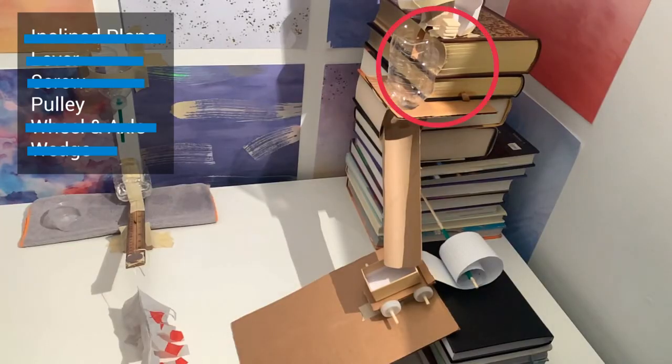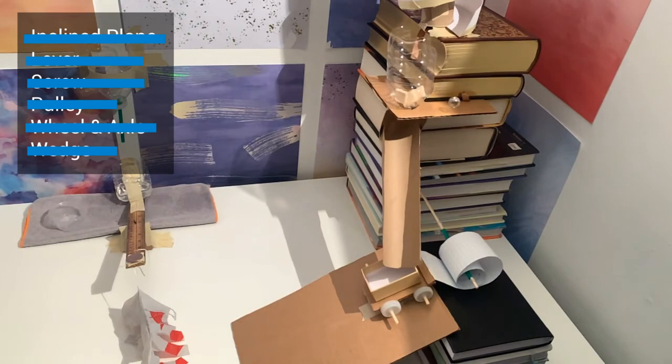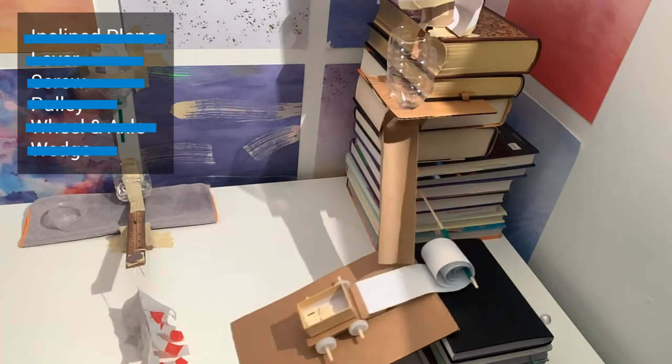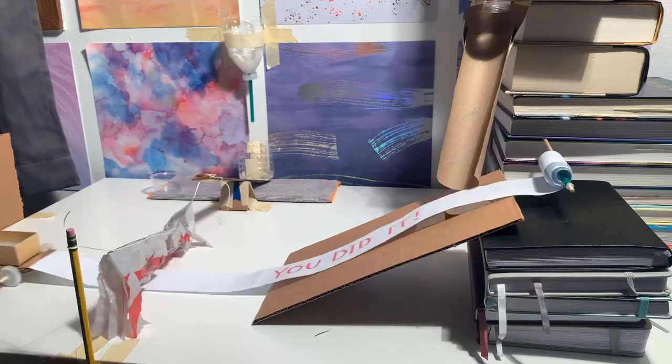The weight and momentum on the cart will reveal a message from the pulley if the Rube Goldberg machine sequence is successful. Congratulations, we did it!